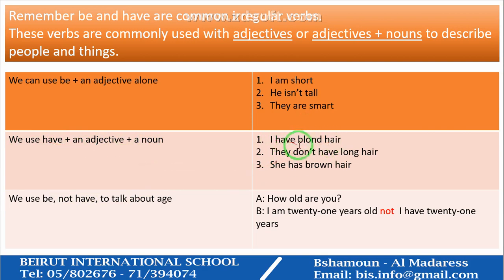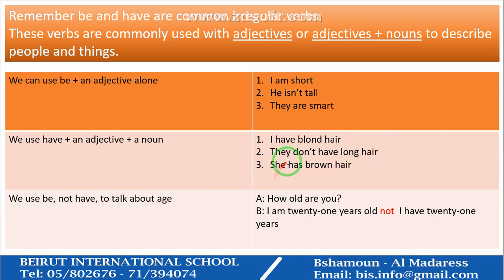Or you can have an adjective plus a noun with HAVE: 'I have blonde hair', 'They don't have long hair', 'She has brown hair.' The structure is: verb HAVE, then the adjective — blonde or brown — then the noun 'hair'. 'Has' is the singular form of verb HAVE.